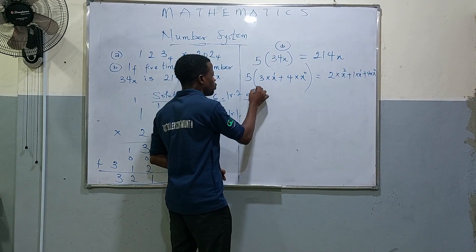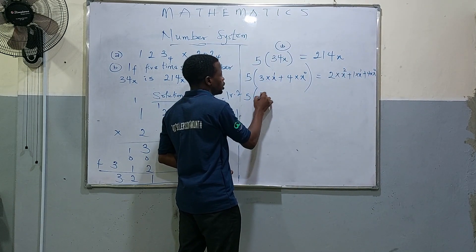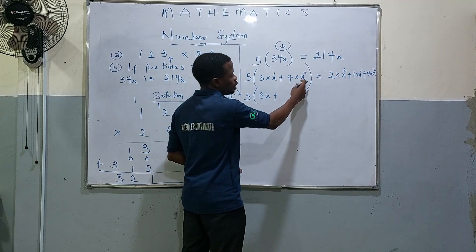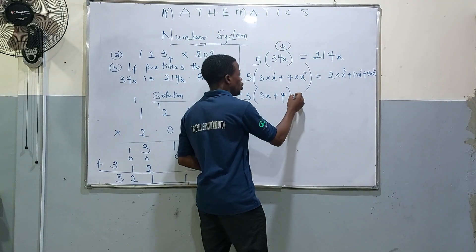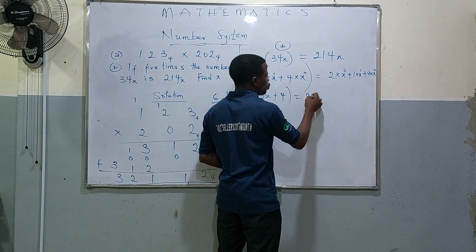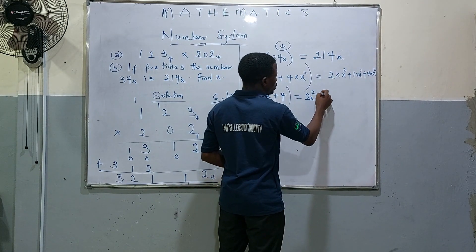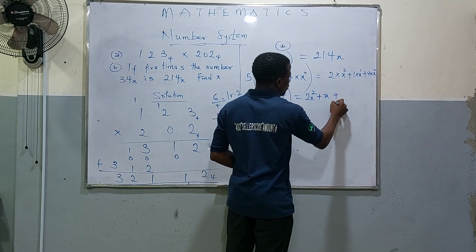So this will give you 5 open bracket, 3x plus 4 times x⁰ is 1, that is 4. Right? Then that will be equal to this: 2x² plus 1x plus 4.